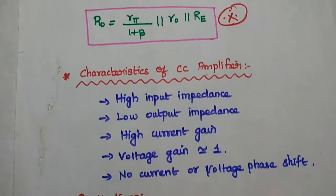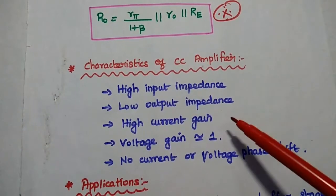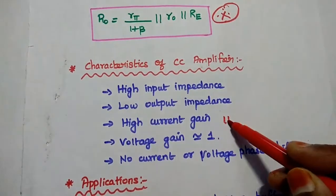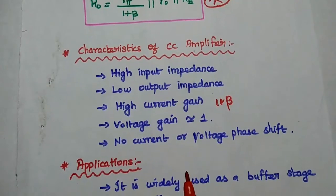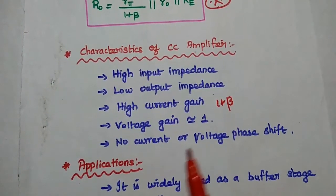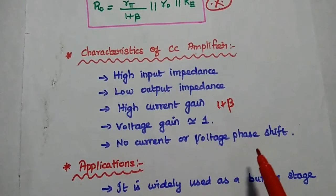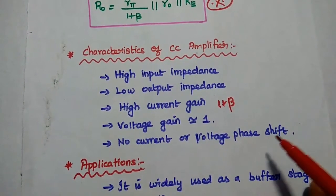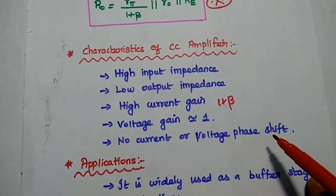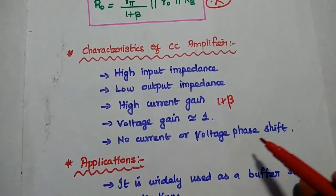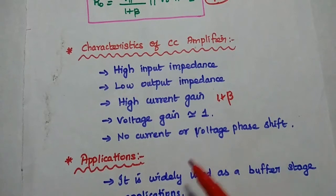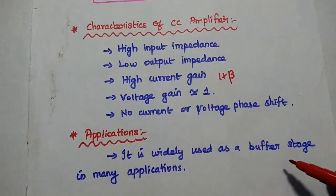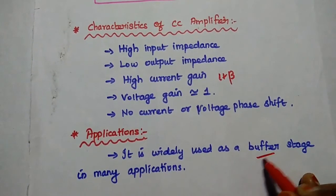The overall characteristics of the CC amplifier are: high input impedance, low output impedance, high current gain of approximately (1 + Beta), and voltage gain approximately equal to unity with no phase shift in current or voltage. That is why it is called the emitter follower — the output is taken across the emitter resistor which follows the input as such. This common collector amplifier is widely used as a buffer amplifier.